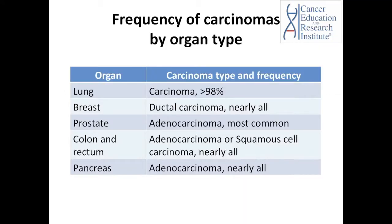More than 98% of all lung cancers are carcinomas. Nearly all breast cancers are ductal carcinoma, meaning that they are originating from the ducts of the glands. Adenocarcinoma is the most common form of prostate cancer. Almost all cancers of the colon and rectum are either adenocarcinoma or squamous cell carcinoma. Almost always, pancreatic carcinoma is adenocarcinoma type and it's highly lethal.